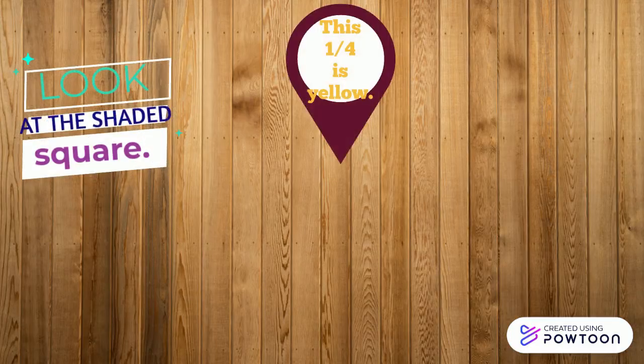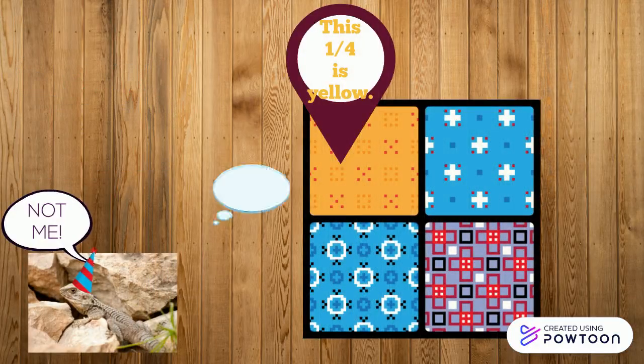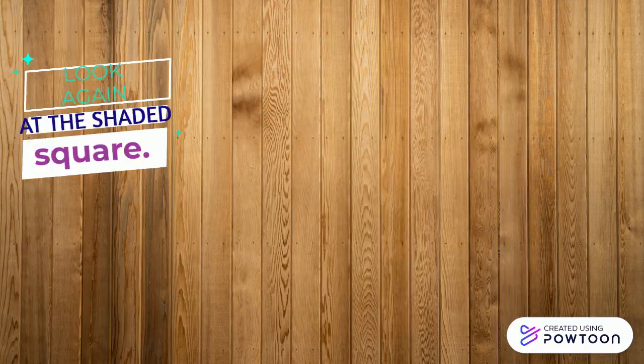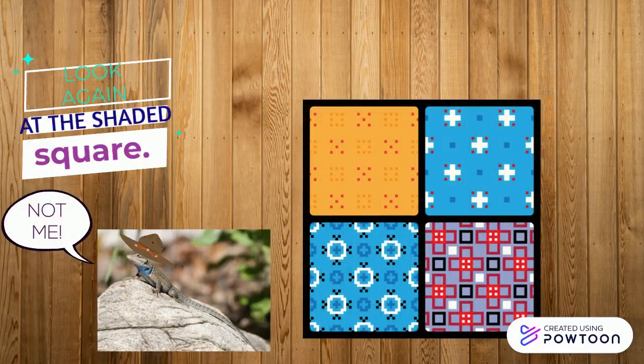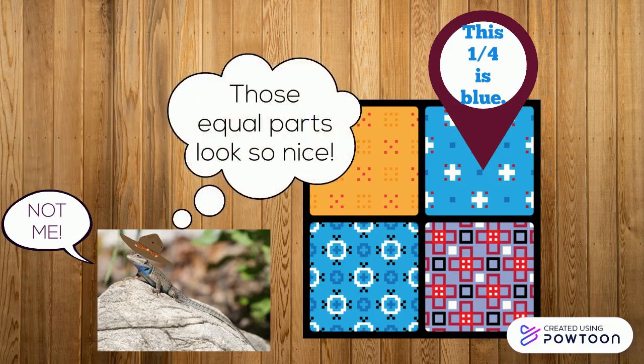Look at the shaded square. This fourth is yellow. Look again at the shaded square. This fourth is blue.